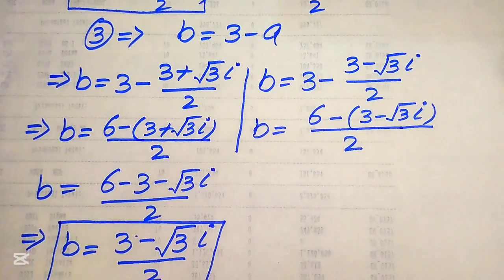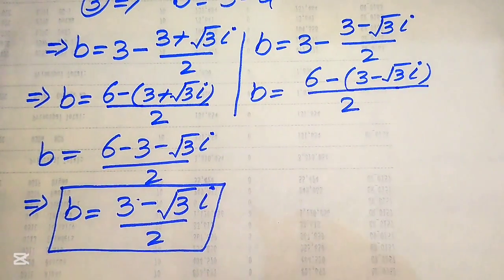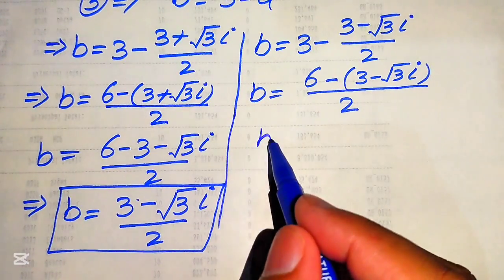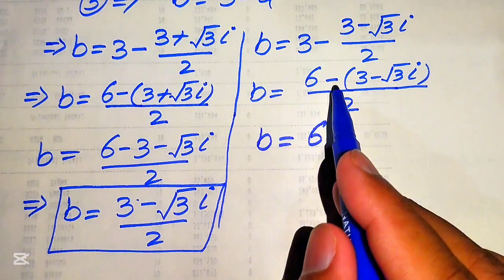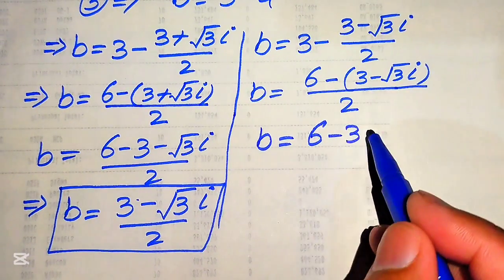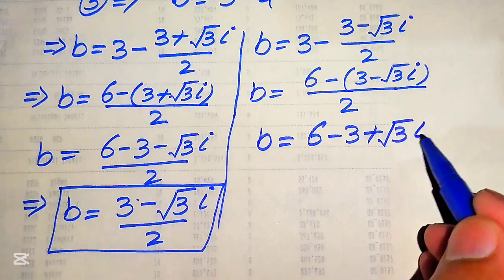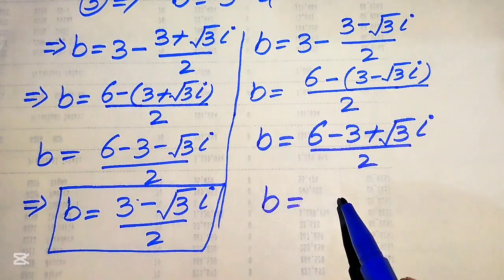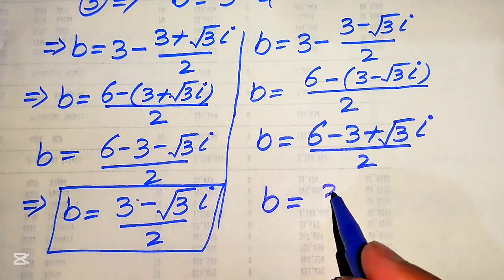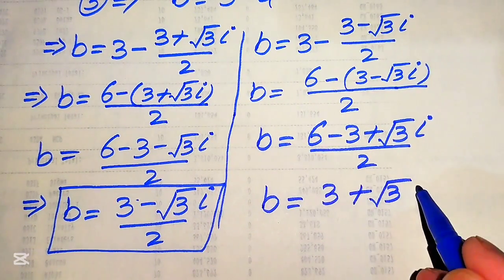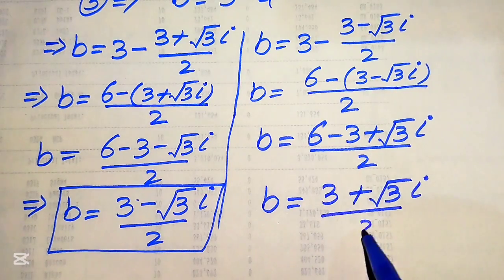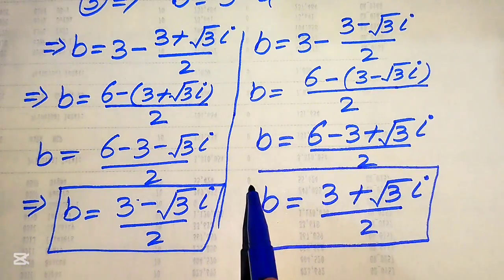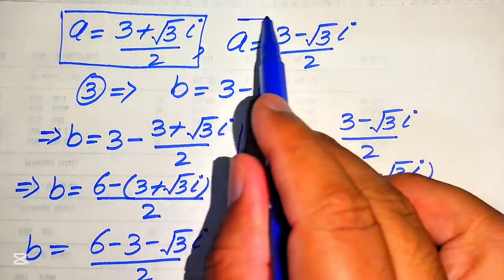For the second case, we similarly take LCM of 2 giving 6 over 2, then distribute the negative sign: 6 minus 3 plus square root of 3 times iota, divided by 2. So B equals 3 plus square root of 3 times iota, divided by 2 for this second case.